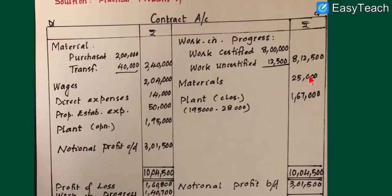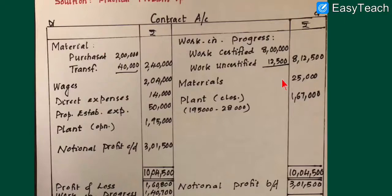The credit side value for material on closing date is 25,000. Work in progress is the main income on the credit side — we split it into work certified and work uncertified. The total is 8 lakh 12,500. All expenses are posted on the debit side and all income and correct items on the credit side.